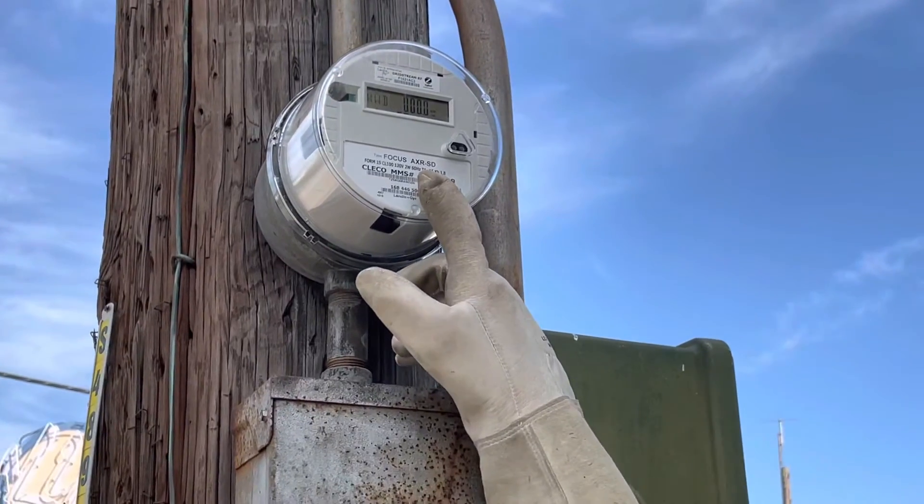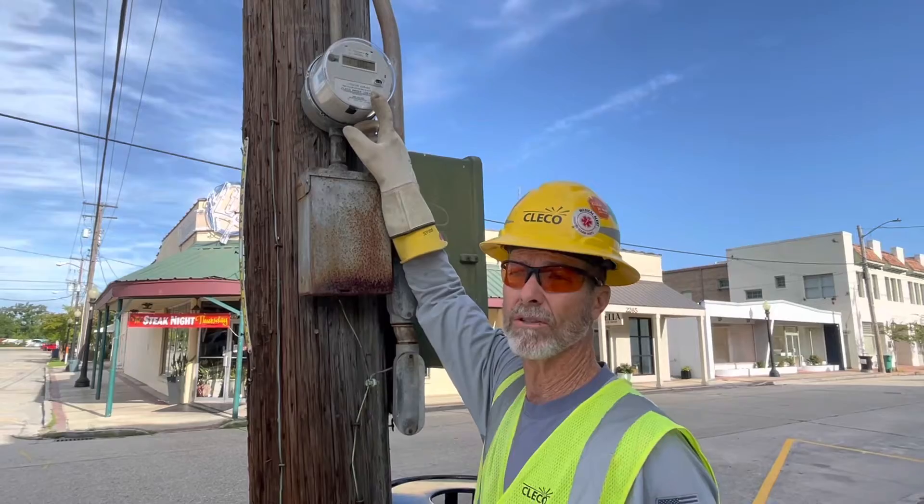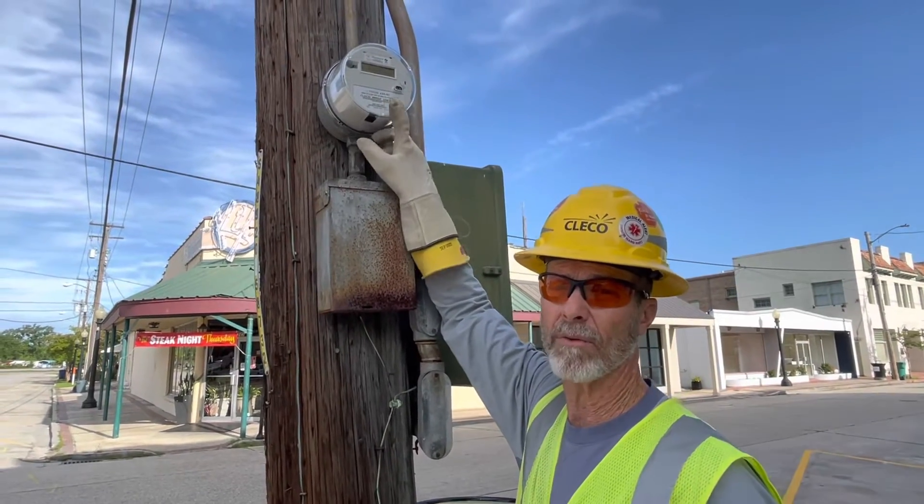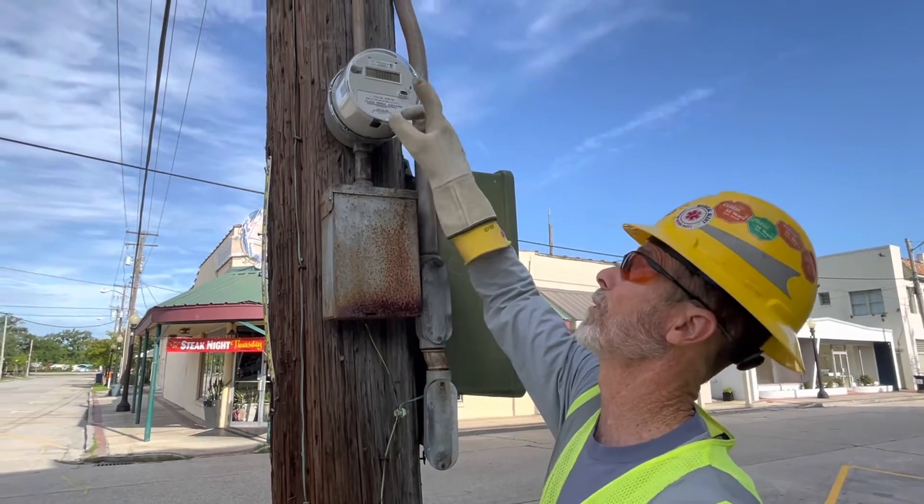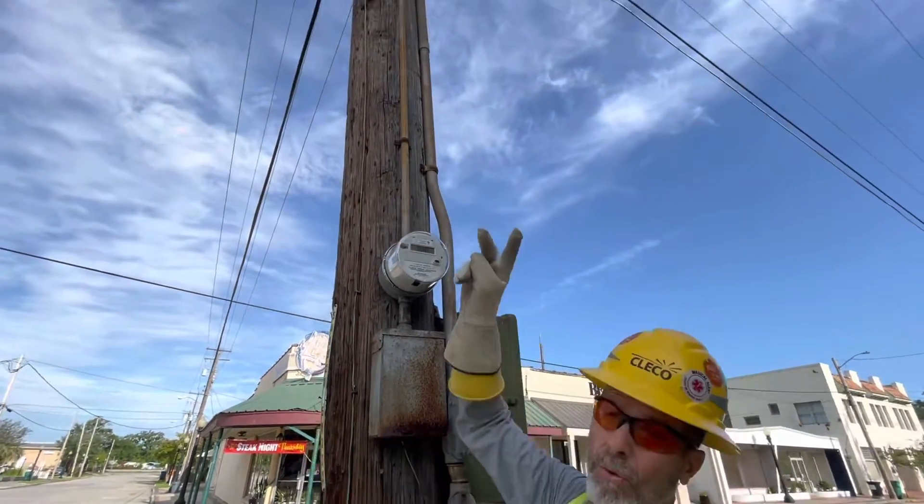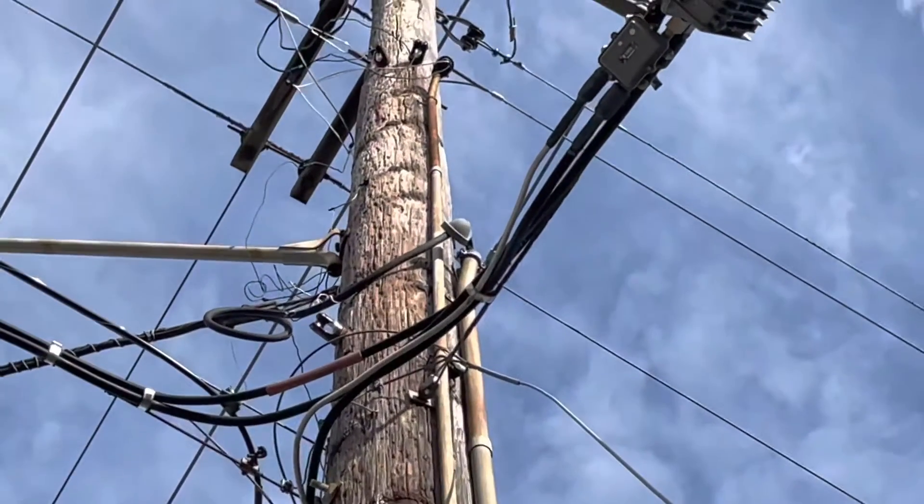What we're going to do is exactly what a serviceman should do when he is called out to install the correct meter for the correct service requested by the customer. This particular customer, if you follow up the staff, requested a two wire service. All he wanted was 120 volts, one phase.